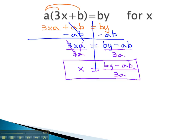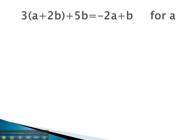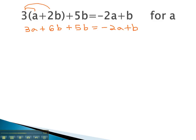Let's try another example. In this next problem, you'll notice we also have parentheses that need to be dealt with first. Again, we will distribute through the parentheses as we begin. This gives us 3a plus 6b plus 5b equals negative 2a plus b. After distributing, we can check to combine like terms.